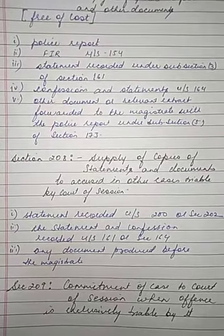Moving to section 210, which deals with the procedure to be followed when there is a complaint case and a police investigation in respect of the same offense. When a case is instituted otherwise than on a police report and it appears to the magistrate during inquiry or trial that the same offense is being investigated by a police officer, the magistrate will stop his trial or inquiry and call for a report on the matter from the police officer investigating that case.